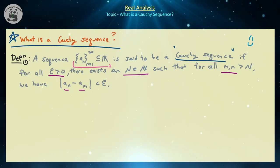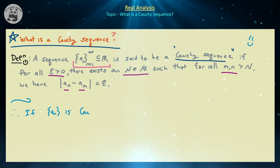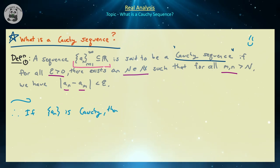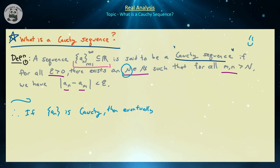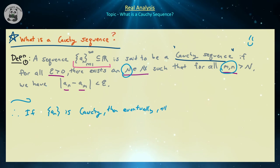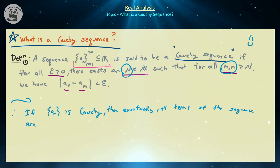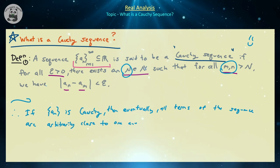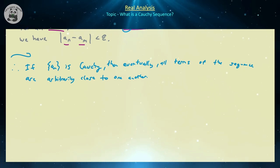So what exactly does this definition tell us? We can phrase it in the following manner. If a_n is a Cauchy sequence, then eventually — and what is this 'eventually'? Well, if there exists this capital N such that m and n are bigger than N (keep in mind m and n are just the indices of the sequence elements) — then all terms of the sequence are arbitrarily close to one another. So if a sequence is Cauchy, then eventually all the terms of the sequence will be arbitrarily close to one another.